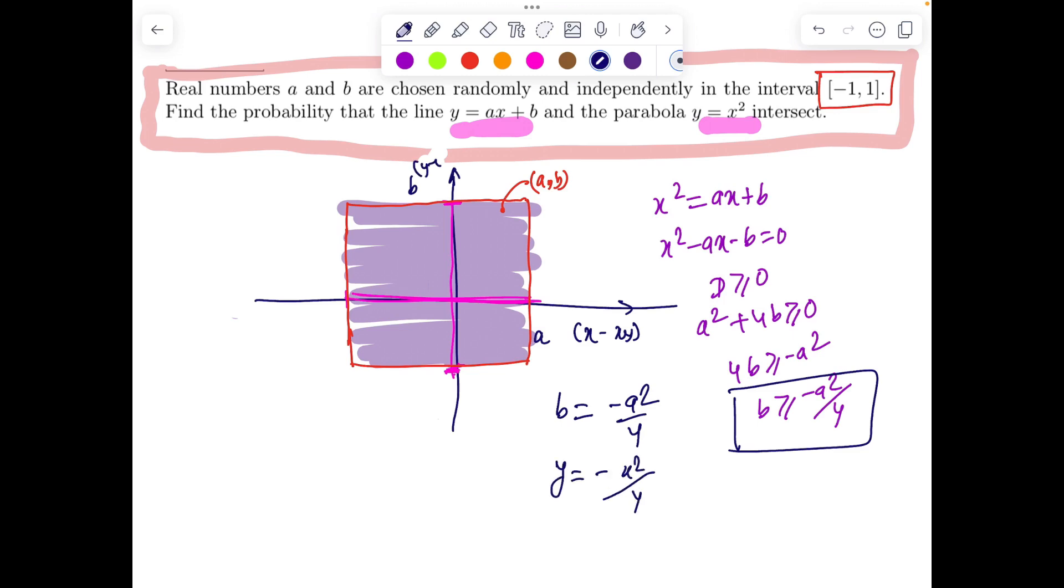So basically we want y = -x²/4. So at x = 0 we have 0. At x = -1 we have -1/4.